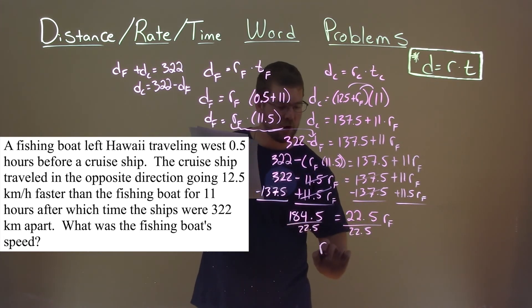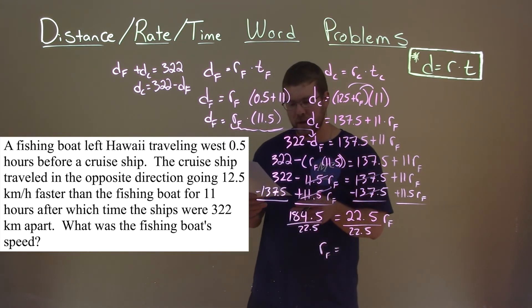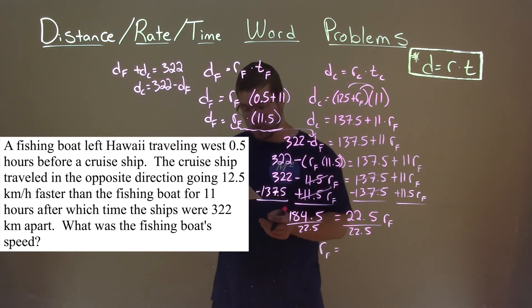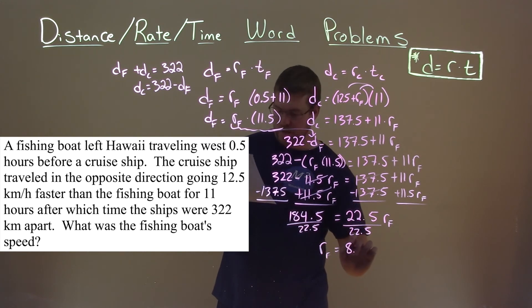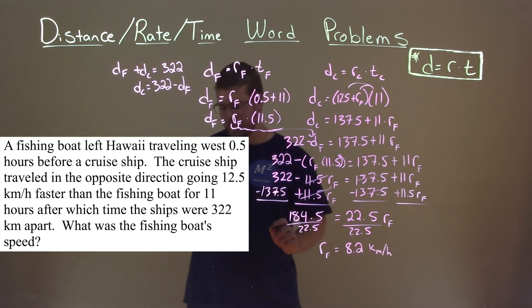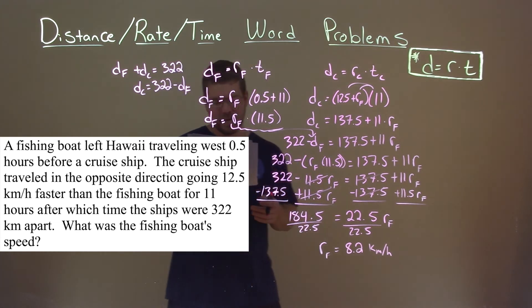We divide 22.5 to both sides. And what do we have? Well, R sub F by itself here is equal to 184.5 divided by 22.5, which is 8.2, and our units is kilometers per hour. And so the fishing boat speed was 8.2 kilometers per hour.